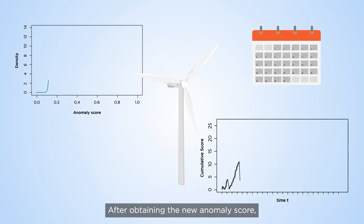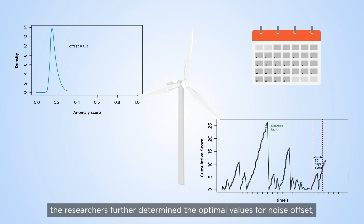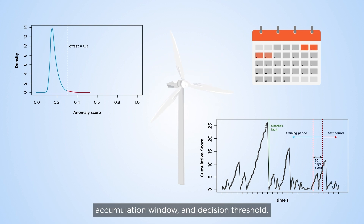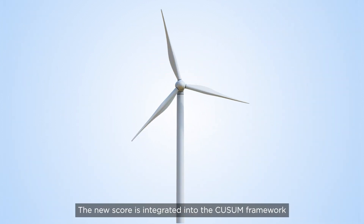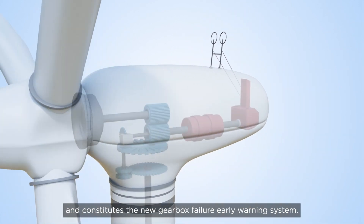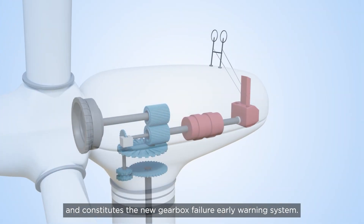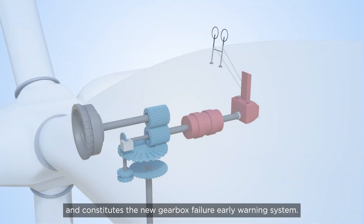After obtaining the new anomaly score, the researchers further determine the optimal values for noise offset, accumulation window, and decision threshold. The new score is integrated into the QSIM framework and constitutes the new gearbox failure early warning system.